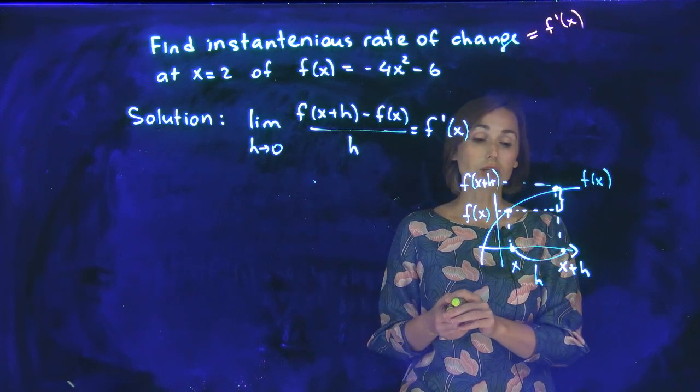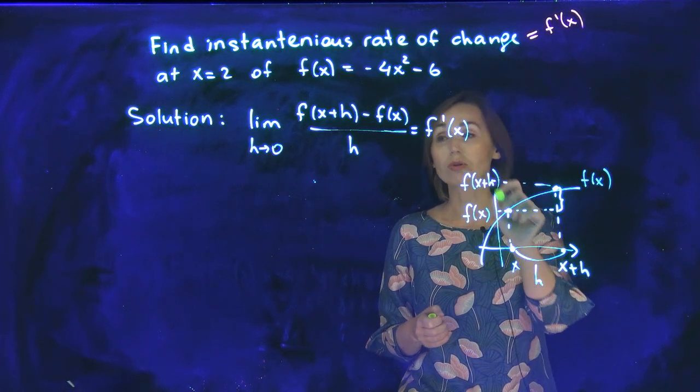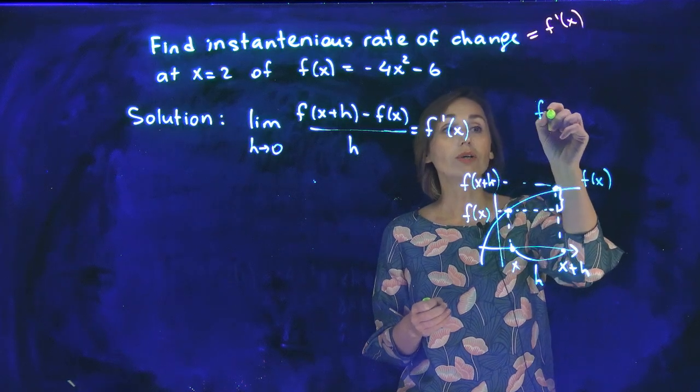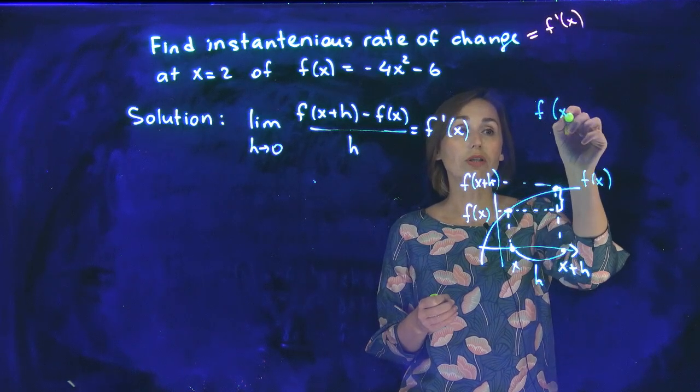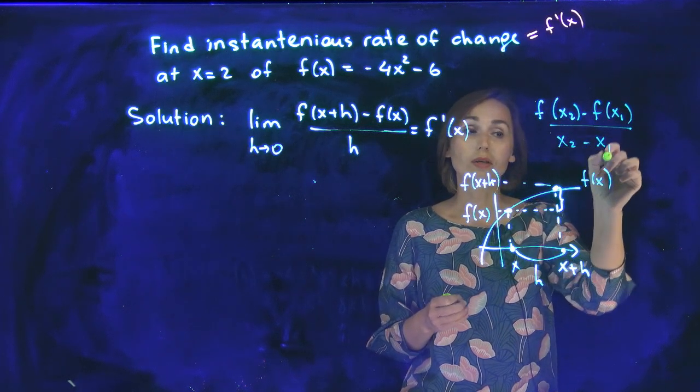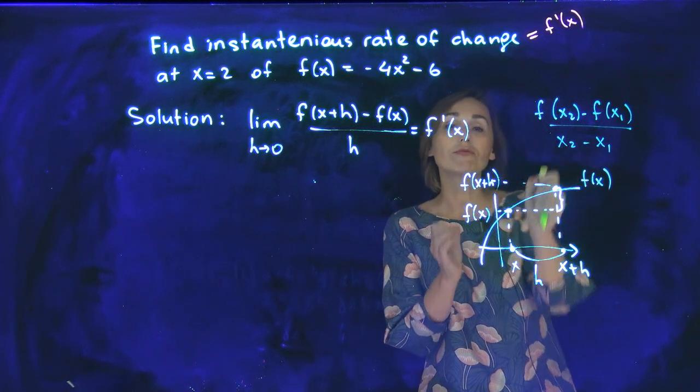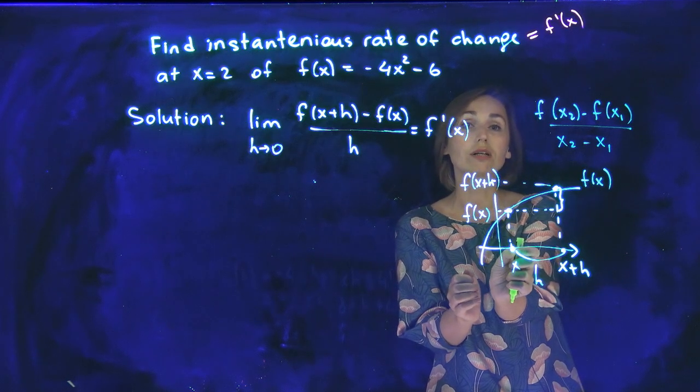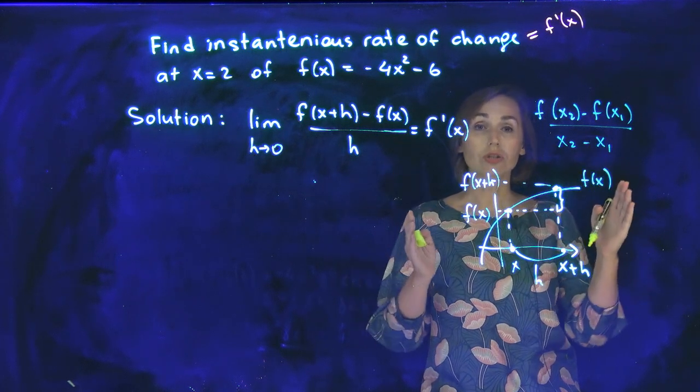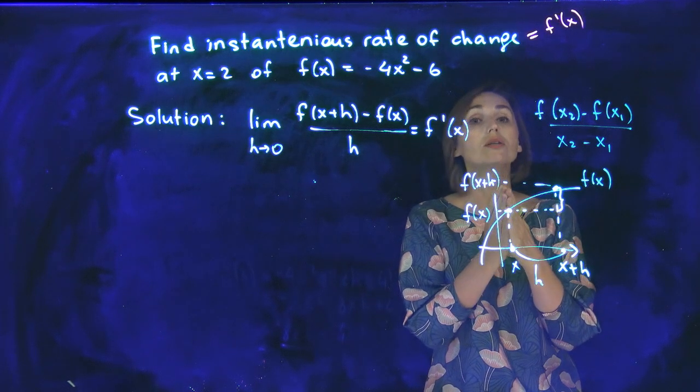Starting point is x and you finish at x plus h. So difference between x values will be h. Difference between values of the function is here. This reminds you formula of the average rate of change: f at x2 minus f at x1 over x2 minus x1. This is average rate of change. And what do we make in this formula? You make these two guys very close to each other because h goes to zero. So instead of average rate of change, you take the rate of change at the point and you call it instantaneous.